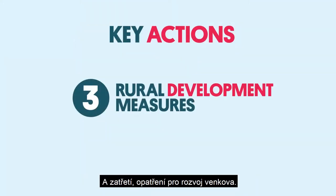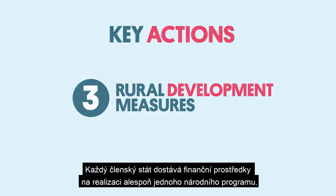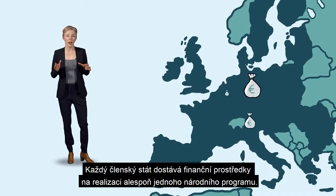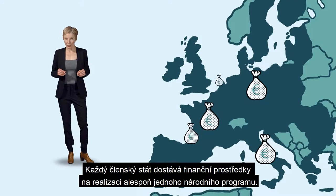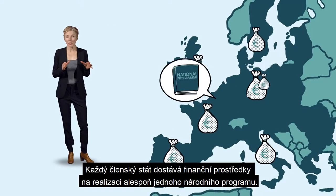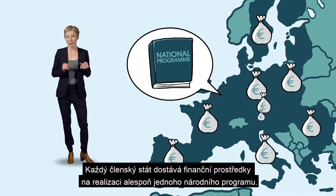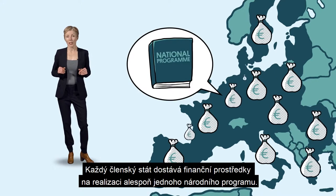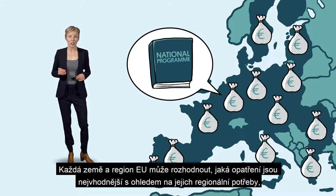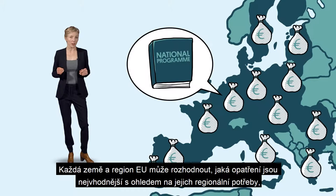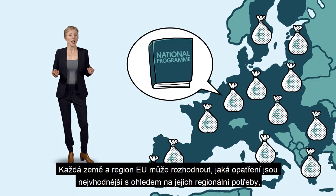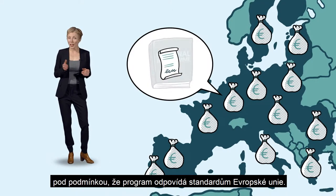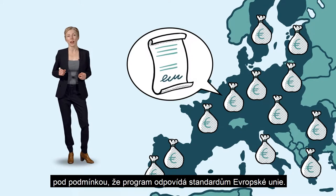And thirdly, rural development measures. Each member state receives a financial allocation to implement at least one national programme. Each EU country and region can decide which measures are best based on their regional needs, under the condition that the chosen programme falls in line with EU standards.